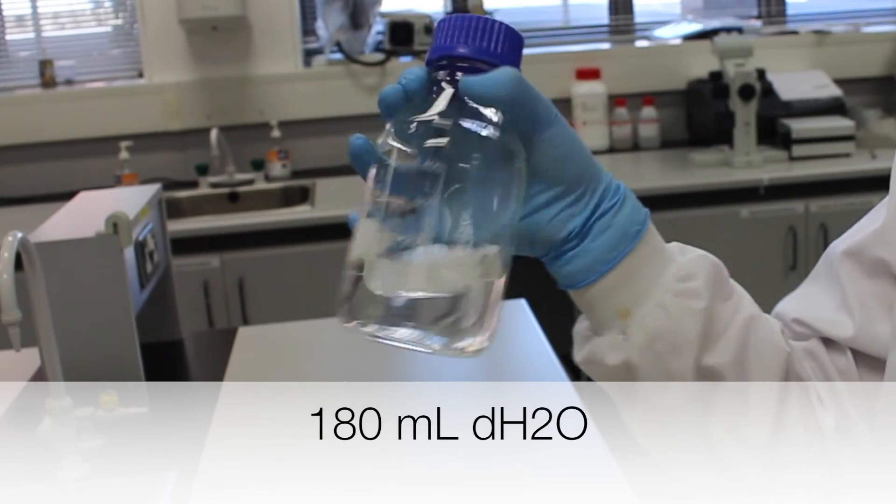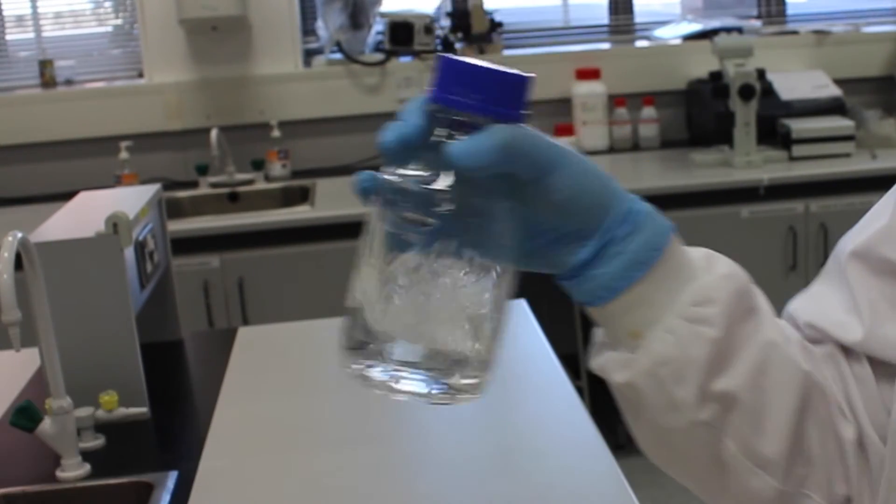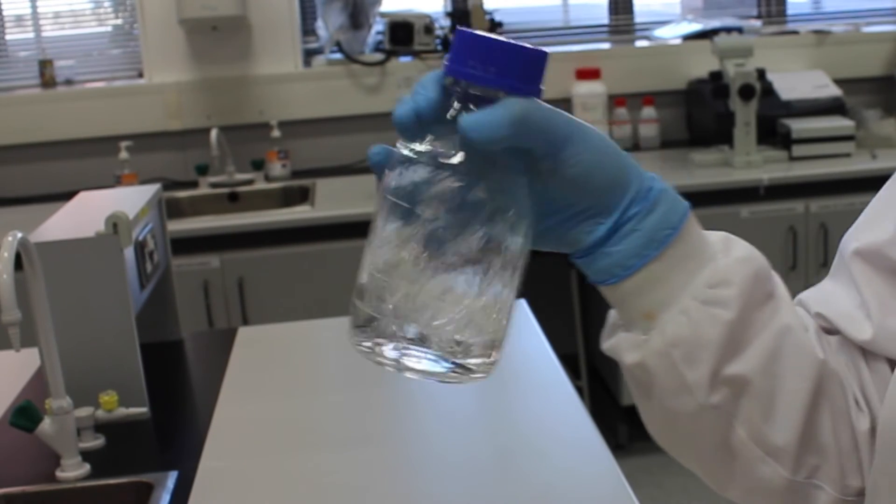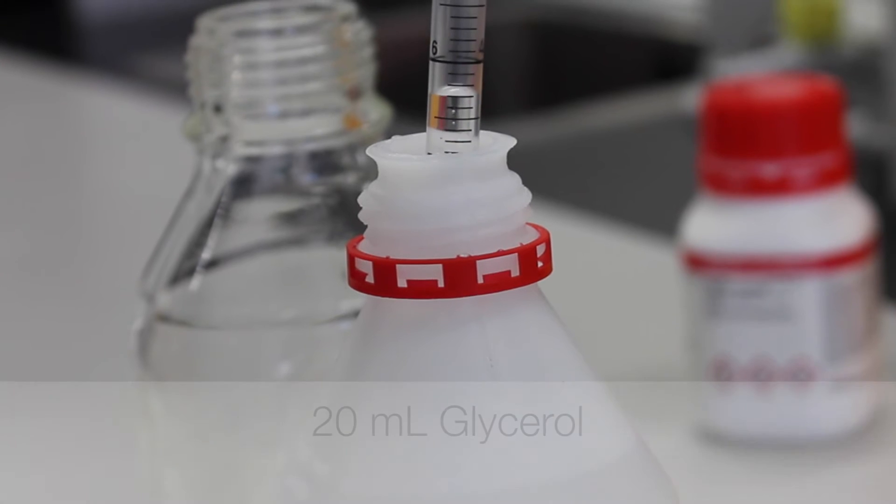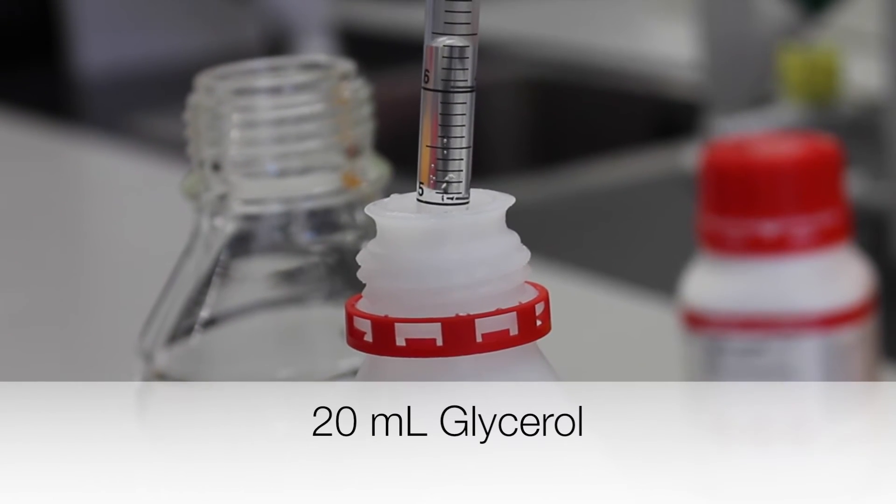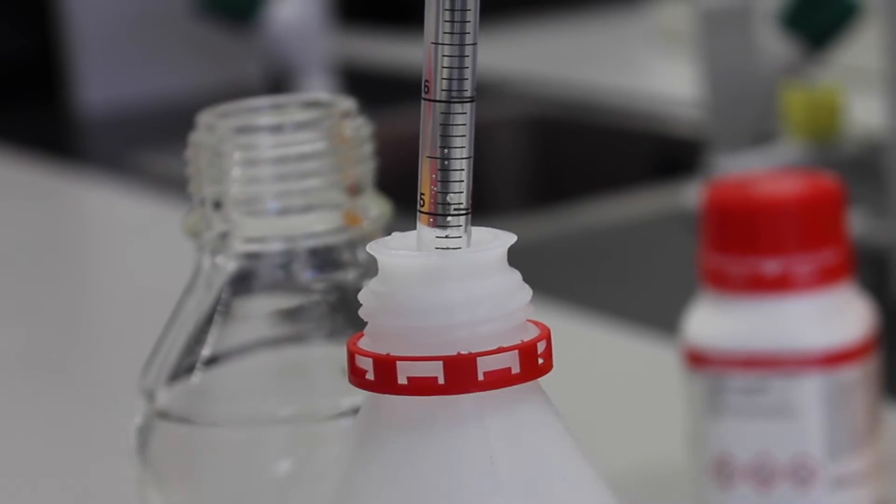180 ml of distilled water is added. The salts are dissolved in the water by swirling the bottle. Once all the salts are dissolved, 20 ml of glycerol is added so that the final volume in the bottle is 200 ml.